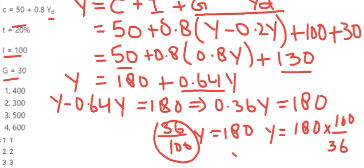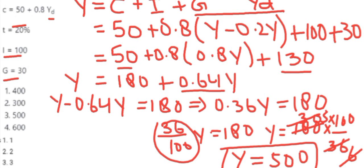Now solving this: 36 goes into 180... this is 5 times 100, which is 500. So our equilibrium level of income is 500. The correct option would be the third one, which is 500.